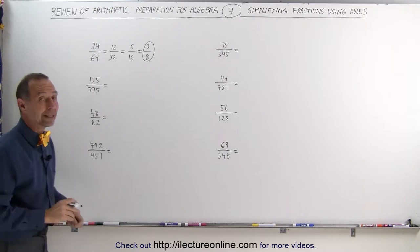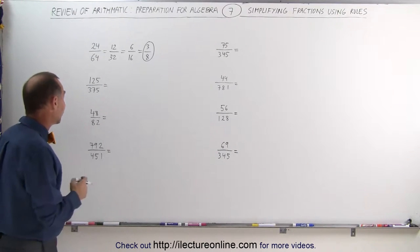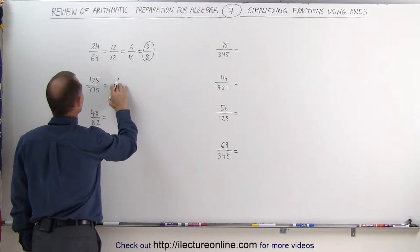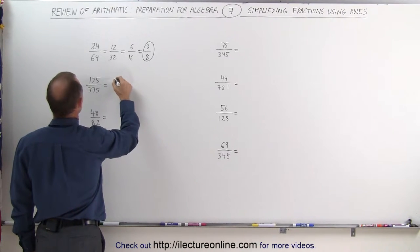Here on this fraction, I noticed right away they both end in 5. Therefore, they must both be divisible by 5. 125 divided by 5 would be equal to, let's see, that's 25.